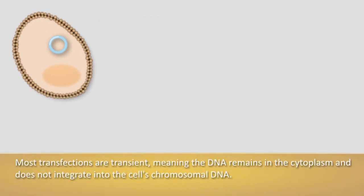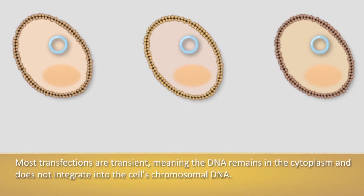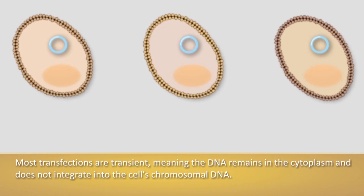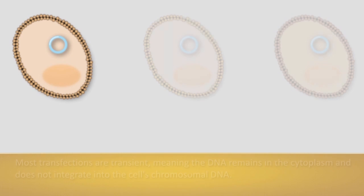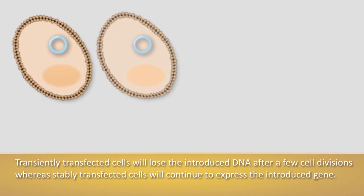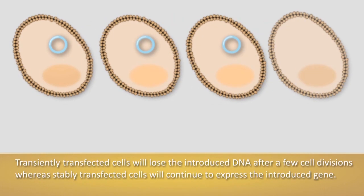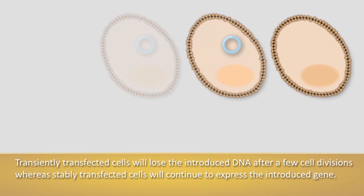Most transfections are transient, meaning that the DNA remains in the cell cytoplasm and does not integrate into the cell's chromosomal DNA. Transiently transfected cells will lose the introduced DNA after a few cell divisions.